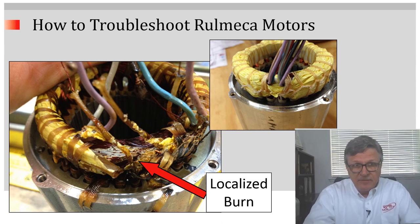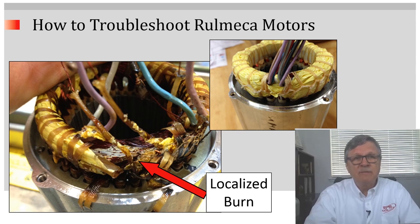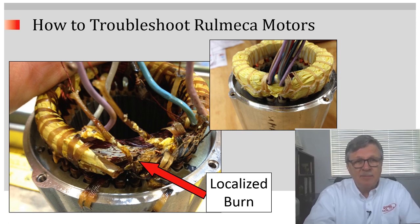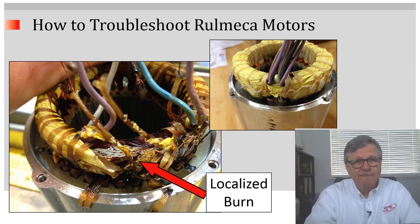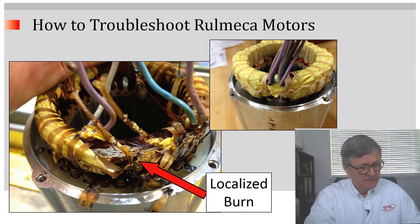This photo was taken after a 230-volt motor was put into service on a 460-volt supply. It is still a localized burn, but it is not a pinprick. So these are two examples of overvoltage damage.